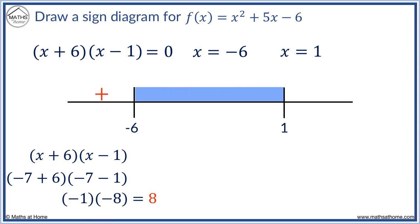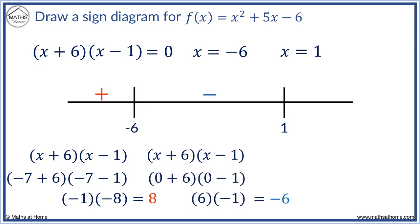Between minus 6 and 1, we can substitute in x equals 0 to get 6 minus 1. This equals minus 6 which is negative.